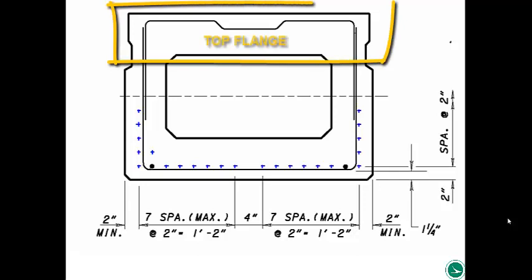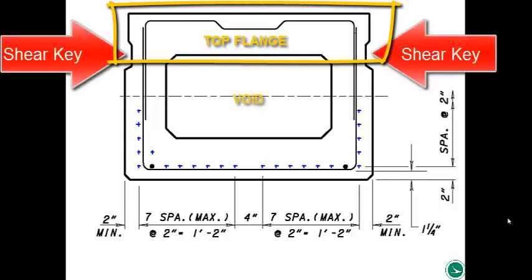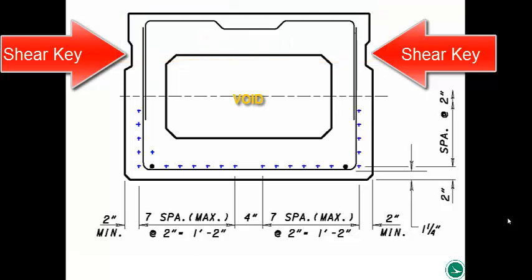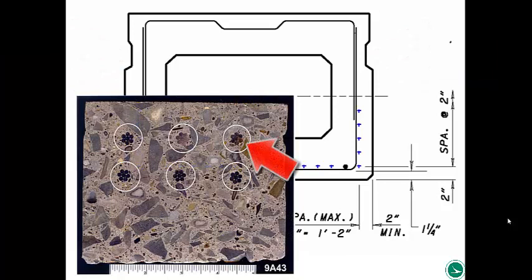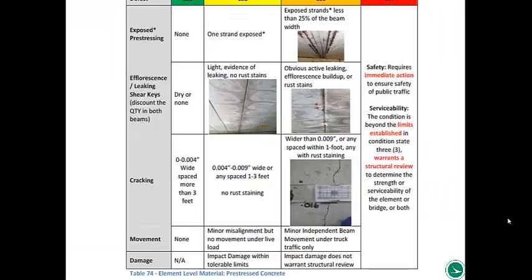This is a cross-section of a pre-stressed box beam with a void. The blue crosses indicate the pre-stressed strands in the cross-section. These pre-stressing strands are seven wires wound around — six wires wound around one wire — embedded inside the concrete. It's very important that we keep these strands protected because they're doing a lot of the heavy lifting.